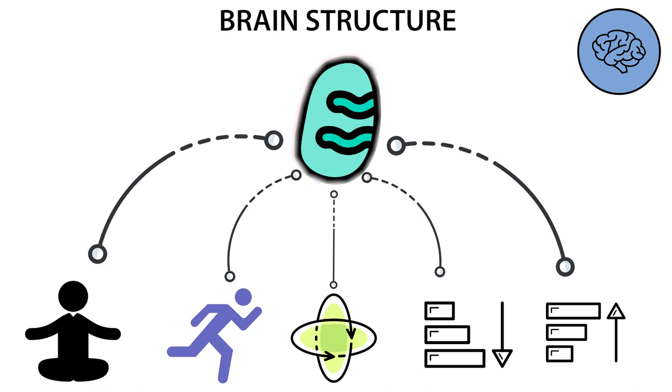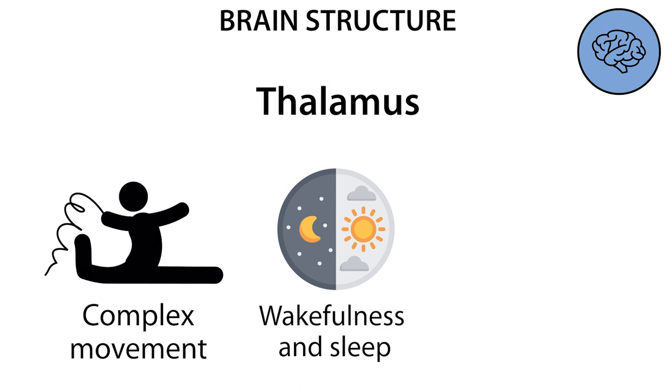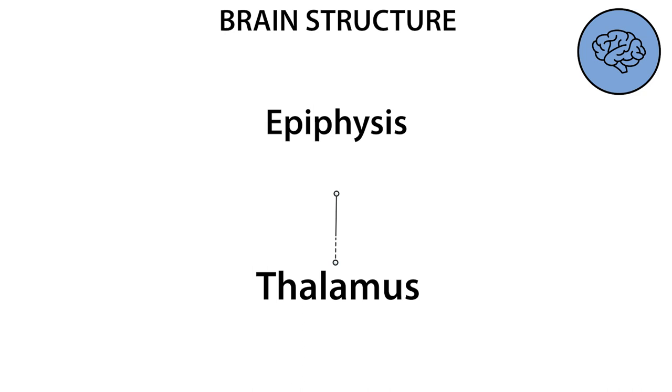The thalamus and hypothalamus are both located in the intermediate brain, diencephalon. The thalamus is involved in the regulation of complex movements, wakefulness, and sleep, as well as in the formation of emotions. Above the thalamus is the epiphysis, a small endocrine gland.